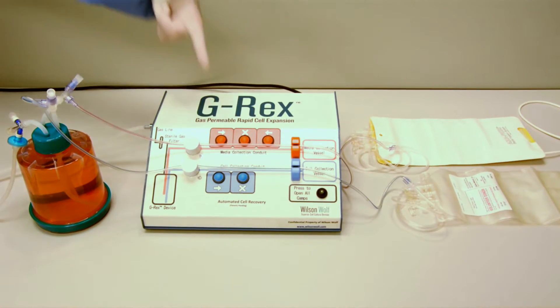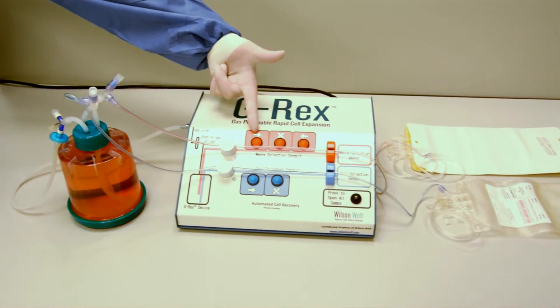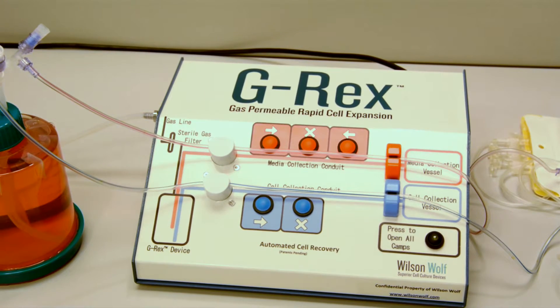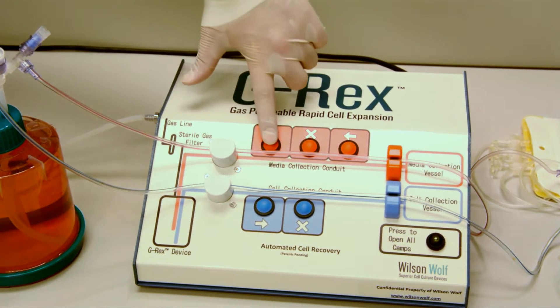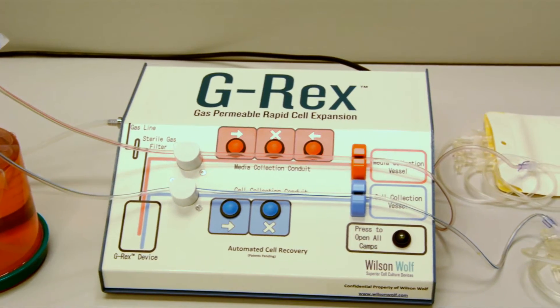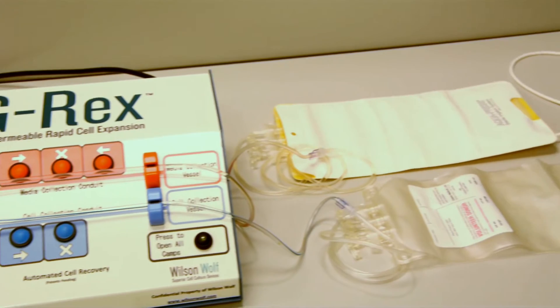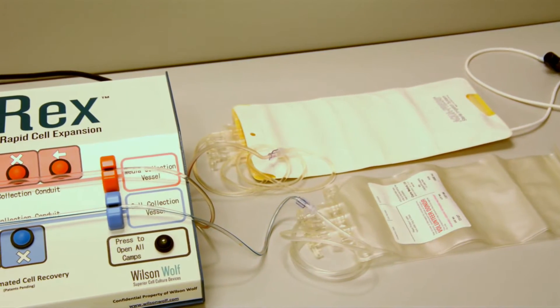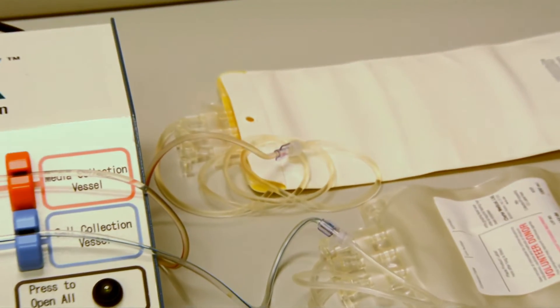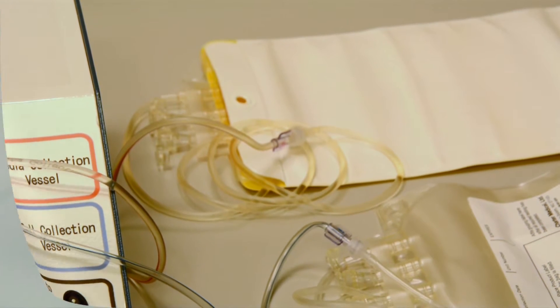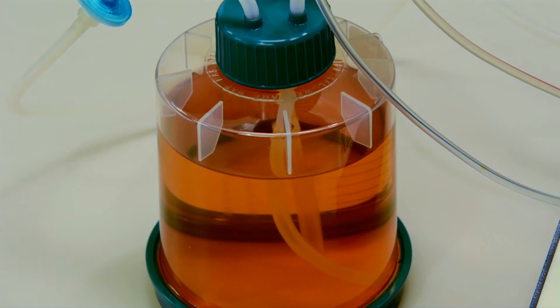Now, we are ready to drain the excess media above the cells by simply pressing the medium collection button. This pressurizes the G-REX and allows the culture medium to flow through the line and collect in the medium bag. This process stops automatically when the optical detector senses air bubbles in the tubing and shuts off the medium clamp, leaving about 10% of the media volume in the G-REX.